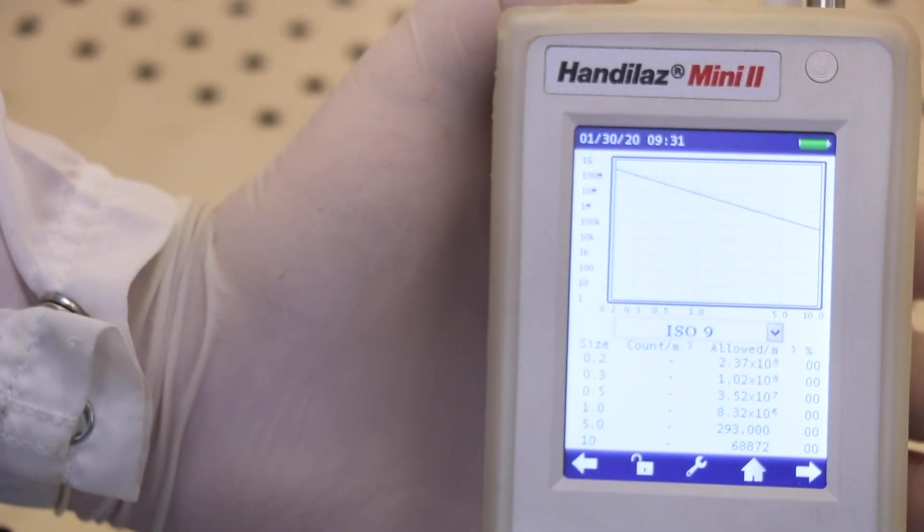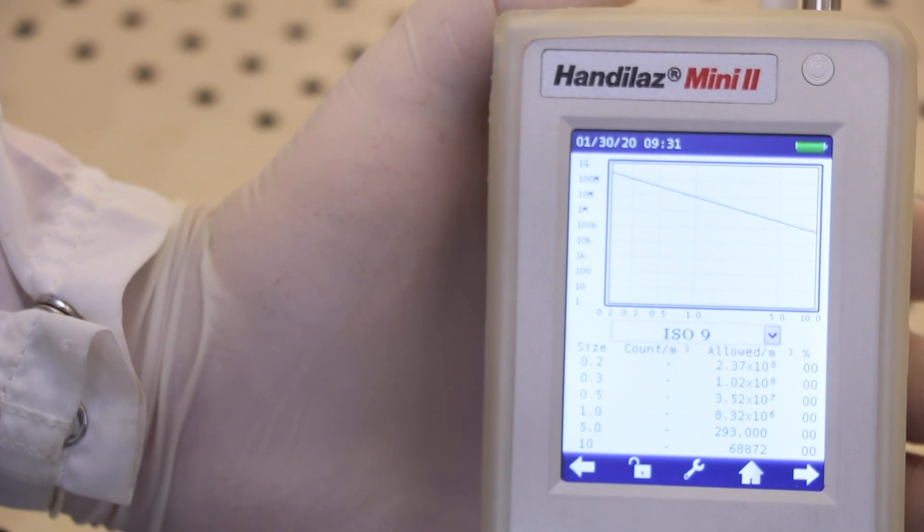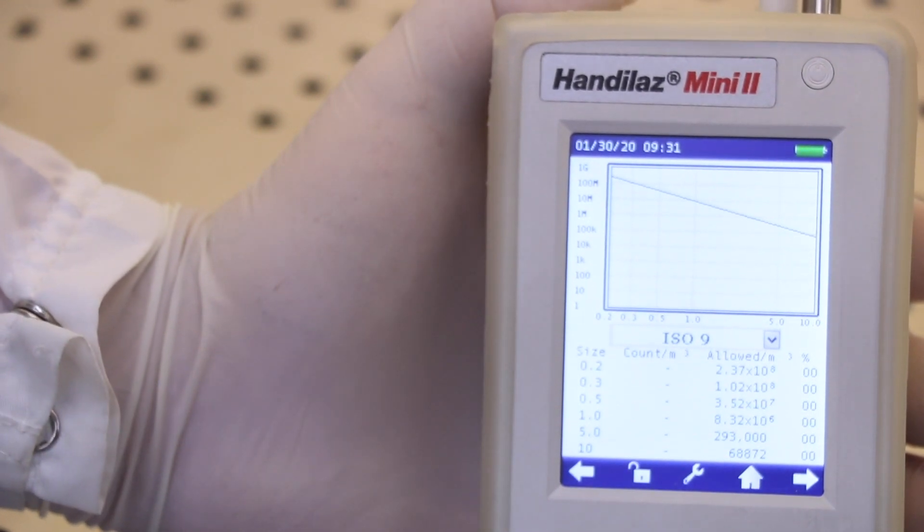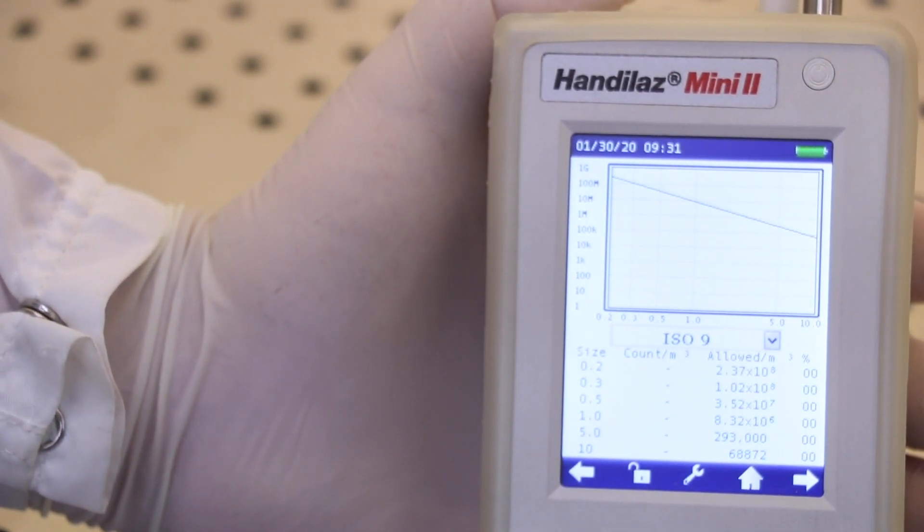One of the many features of the Particle Measuring System's HandyLase Mini 2 is its ability to quickly verify the specification of a clean room or area.